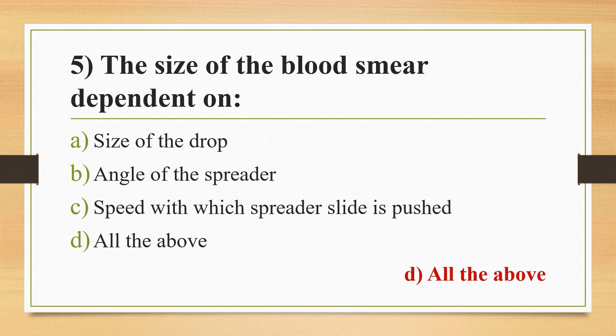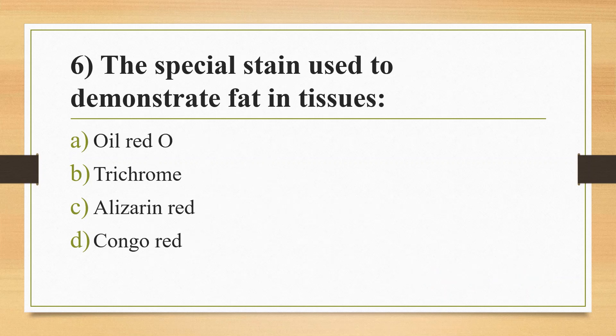The smear should be 3–4 cm. Question 6: The special stain used to demonstrate fat in tissues. Option A: Oil Red O. Option B: Trichrome. Option C: Alizarin Red. Option D: Congo Red. Answer is Option A, Oil Red O. Oil Red O is a special stain used to demonstrate lipid, mainly from frozen tissue. Trichrome stain is used to visualize collagen in connective tissue.